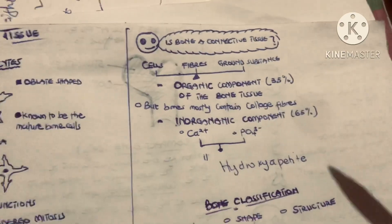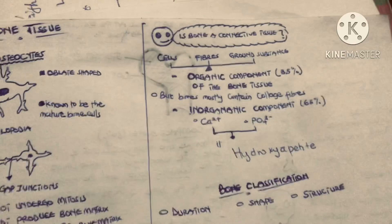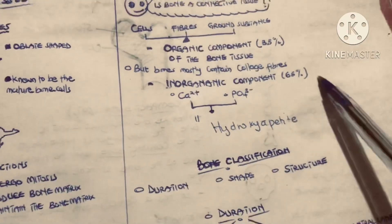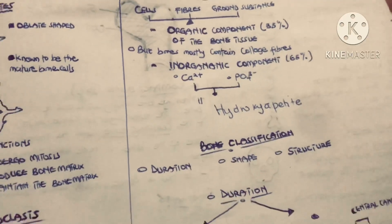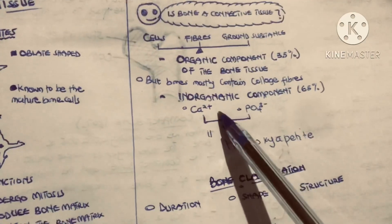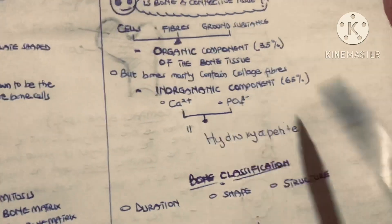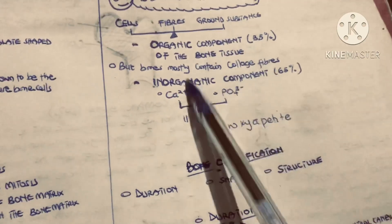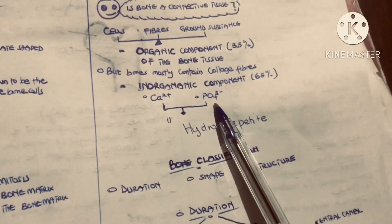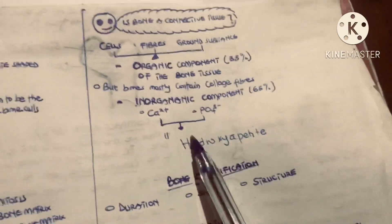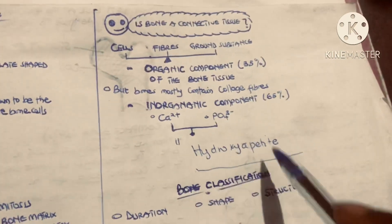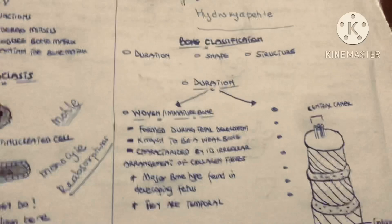The organic component of bone tissue contributes 35 percent, and the fibers are mainly collagen fibers — specifically collagen type one. We also have the inorganic component of the bone tissue, which contributes 65 percent. This inorganic component is mainly made up of two ions: calcium and inorganic phosphate. Together, calcium and inorganic phosphate are called hydroxyapatite.